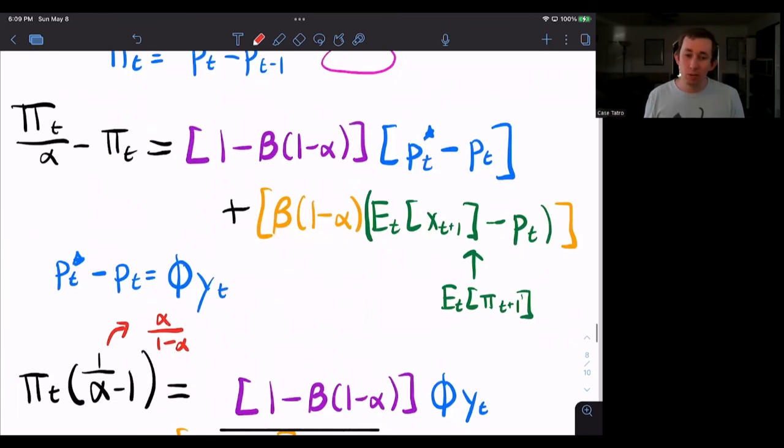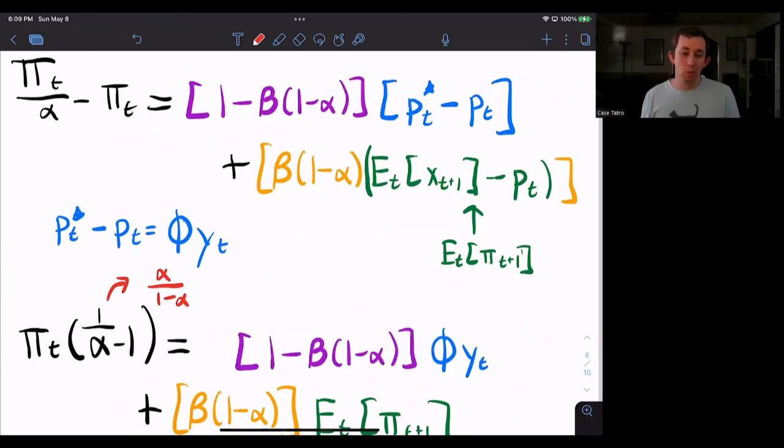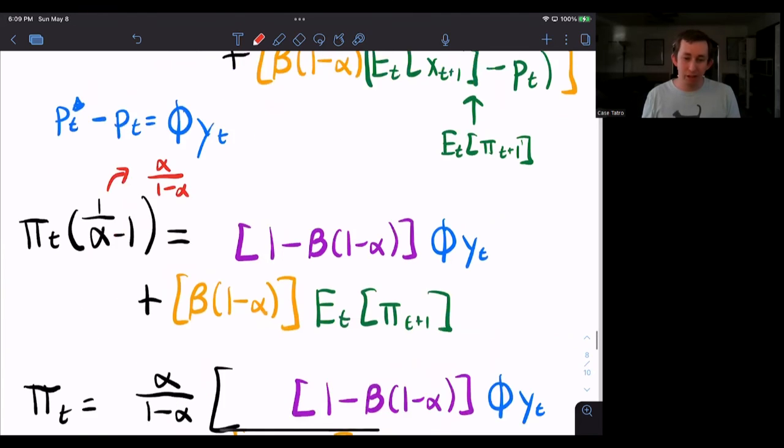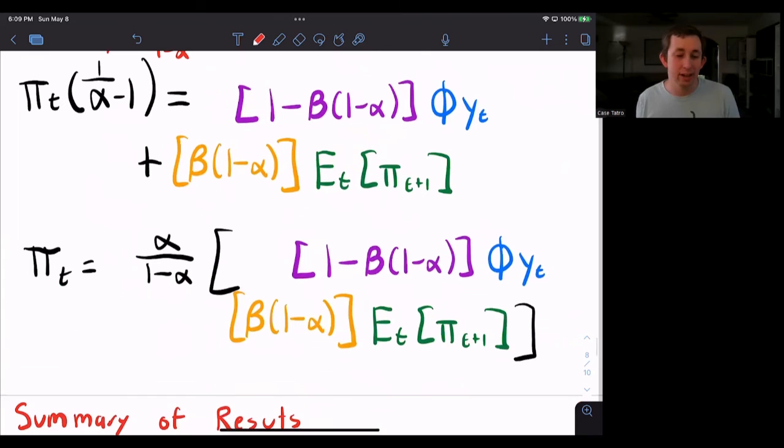Which I will plug in right there. One over alpha minus one is alpha over one minus alpha. I'm really trying to get inflation. So I'm going to divide both sides by alpha over one minus alpha. And then I'm going to get this equation right here.